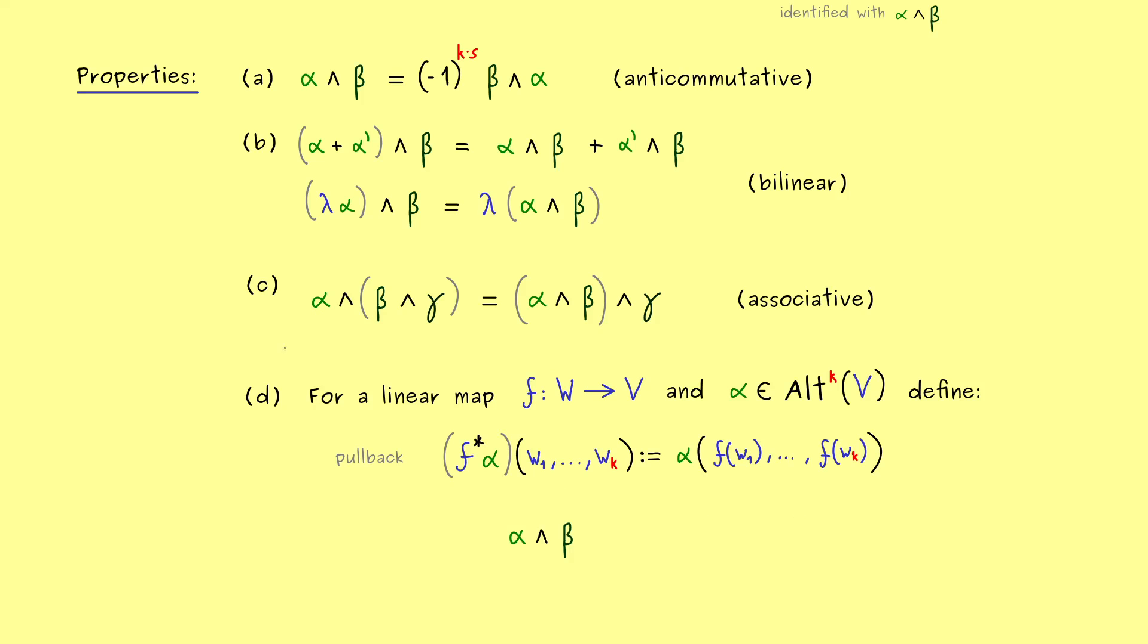And now the natural question is, what happens if we apply this pullback to the wedge product? So can we simplify f* of (alpha wedge beta)? And indeed we can, we can just calculate the wedge product of the two pullbacks. So please remember that, the pullback can be pushed into the wedge product. And here I can tell you, this property means for some people that the wedge product is natural.